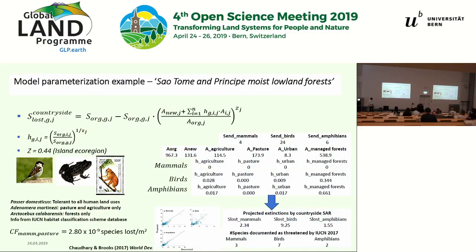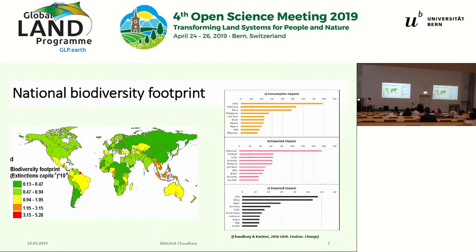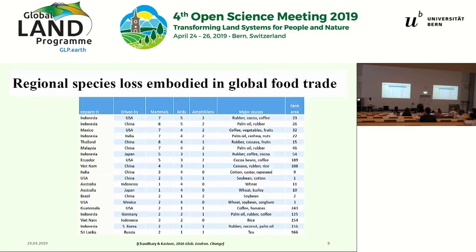The model takes into account how many species are in a region and their habitat preferences — if a region only has house sparrows that can survive alongside humans, the impact is less; if it has sensitive species that can only survive in natural vegetation, species loss is higher. With Dr. Kastner, first results show which countries' food consumption or trade causes the most species loss. Rubber, cocoa, and coffee imports from Indonesia to the US cause the highest species loss — around 14 species threatened with extinction due to US consumption of Indonesian food products.